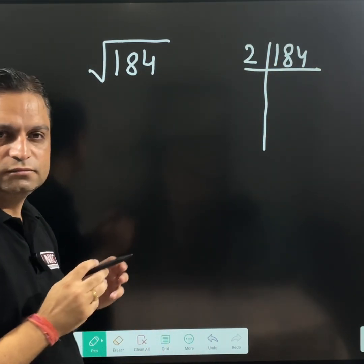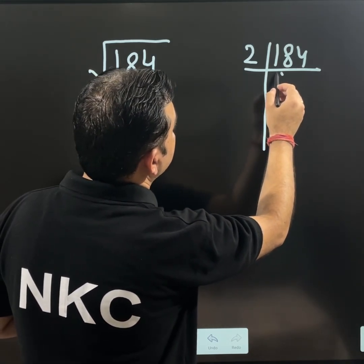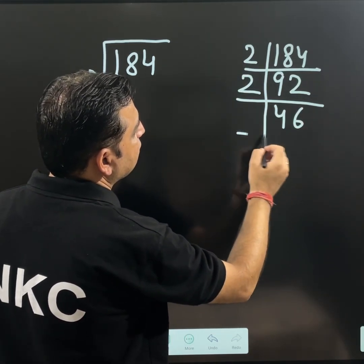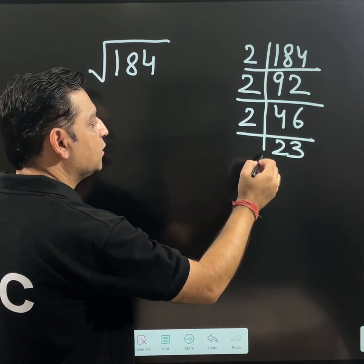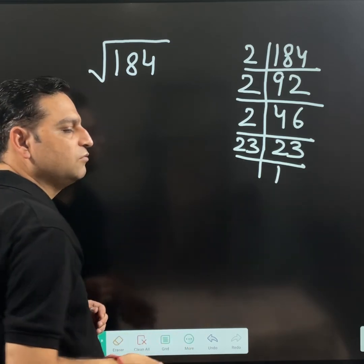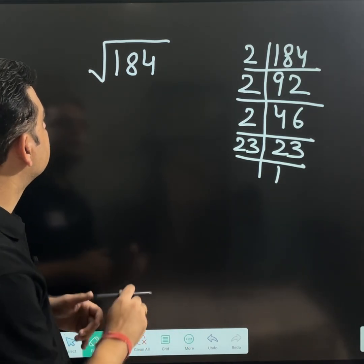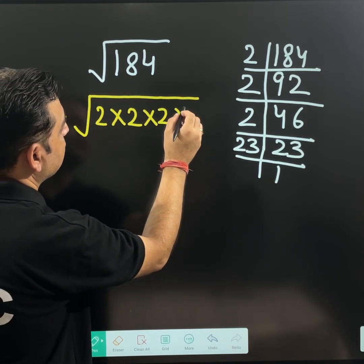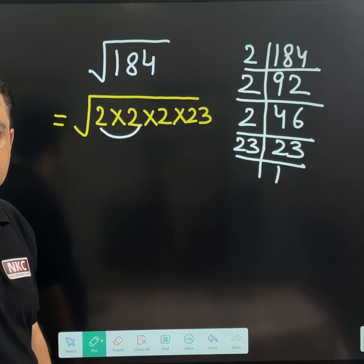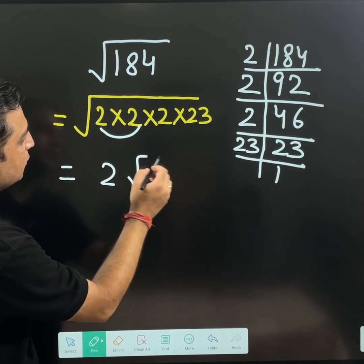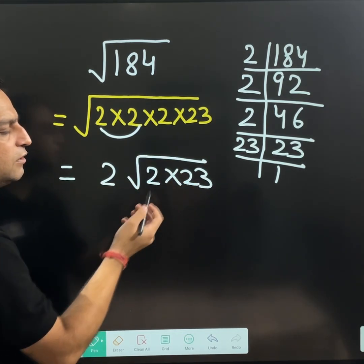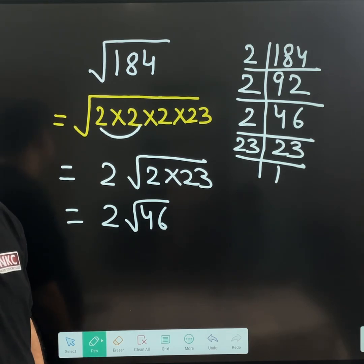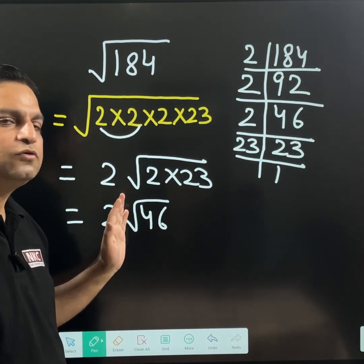184 start dividing by 2. If I divide it by 2, I will get 2 times 9 is 18. 2 times 2 is 4. Again divide by 2, I will get 46. Again divide by 2, I will get 23. Now 23 is a prime number which can be divided only by 23. That means root 184 can be written as 2 times 2 times 2 times 23. First 2 are making a pair, right? So this 2 will come out but last 2 and 23 both will remain inside and your answer will be 2 times square root of 46. So root 184 can be written as 2 times root 46.